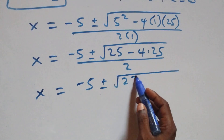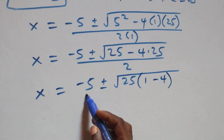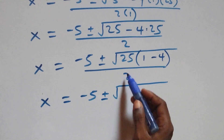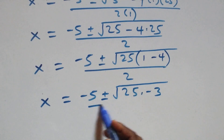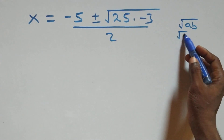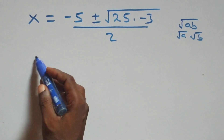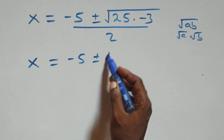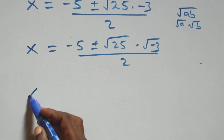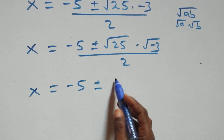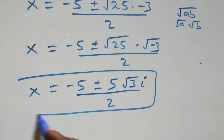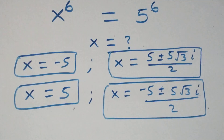We get x equals minus 5 plus or minus square root of 25 minus 4 times 25, all over 2. Factoring out 25 inside the square root: x equals minus 5 plus or minus square root of 25 times 1 minus 4, equals minus 5 plus or minus square root of 25 times negative 3, all over 2. Separating the roots: x equals minus 5 plus or minus 5 times i root 3, all over 2. These are two more complex solutions.